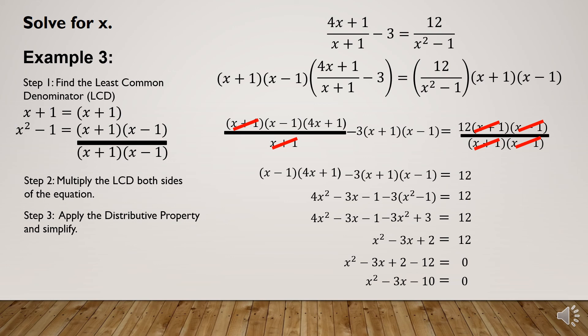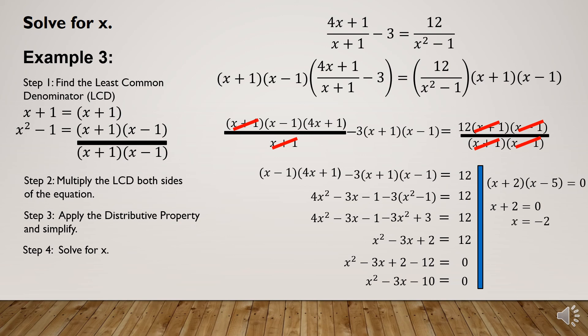We solve for x using factoring. Factoring x² - 3x - 10 gives (x + 2)(x - 5) = 0. Setting each factor to zero: x + 2 = 0 gives x = -2, and x - 5 = 0 gives x = 5. So there are two values of x.